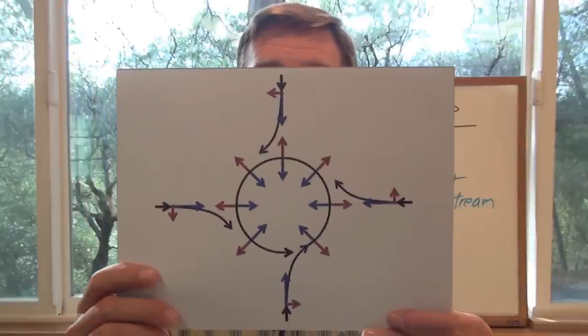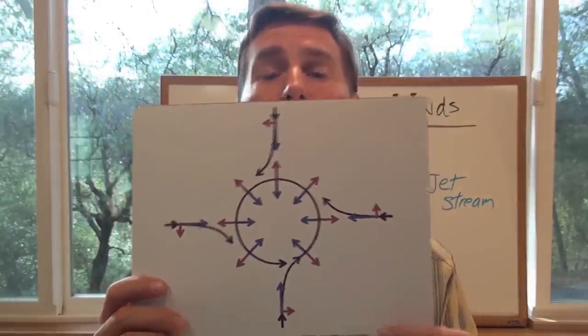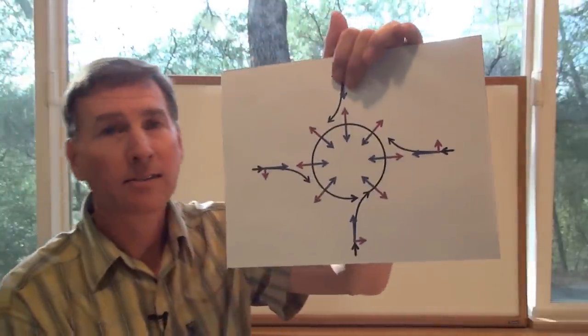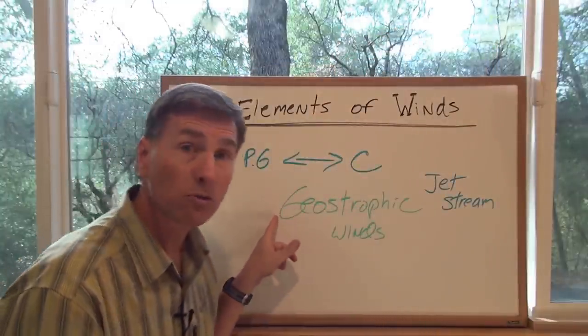Okay, so we have two forces. We've got pressure gradient and the Coriolis force. Look at this diagram. Uh-oh, looks kind of scary to me. Well let's take a look at something called geostrophic winds.